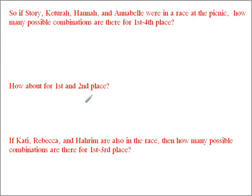Now if you look here, in honor of the girls who asked me to be in the video, this is the best I can do, in terms of involving all the people that asked. So, if Story, Keturah, Hannah, and Annabelle were in a race at the picnic, how many possible combinations are there for 1st through 4th place? So let's think about this. Combinations for 1st through 4th place. Well, there's going to be 4 for 1st place, 3, 2, 1.